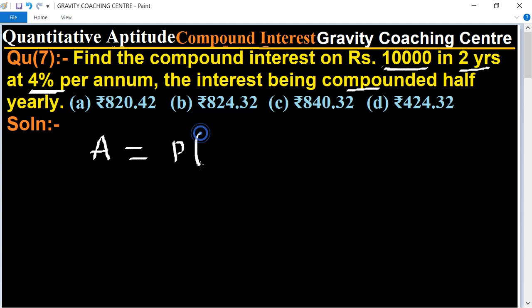P times (1 plus R/2 upon 100) to the power 2T. So, principal equals ten thousand